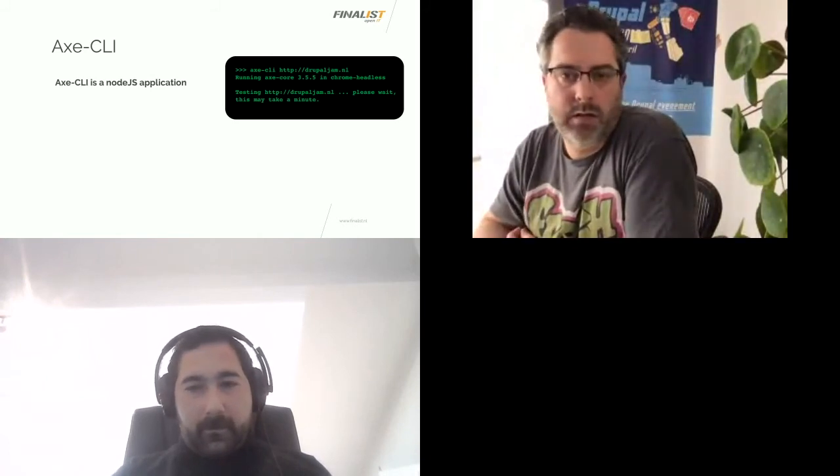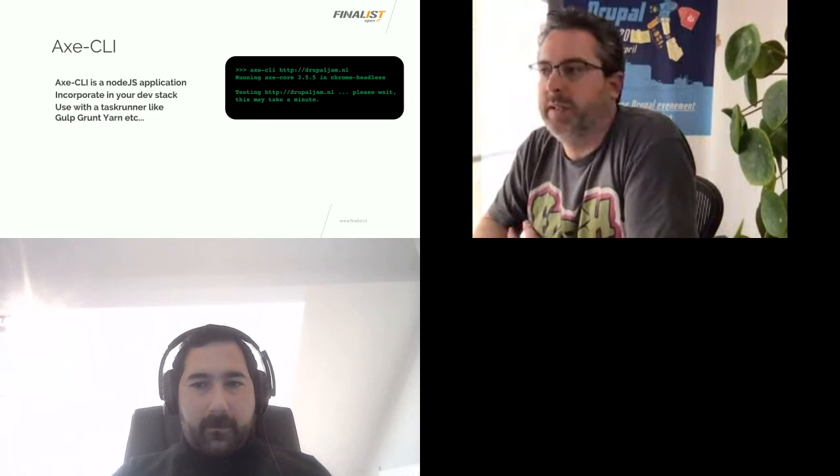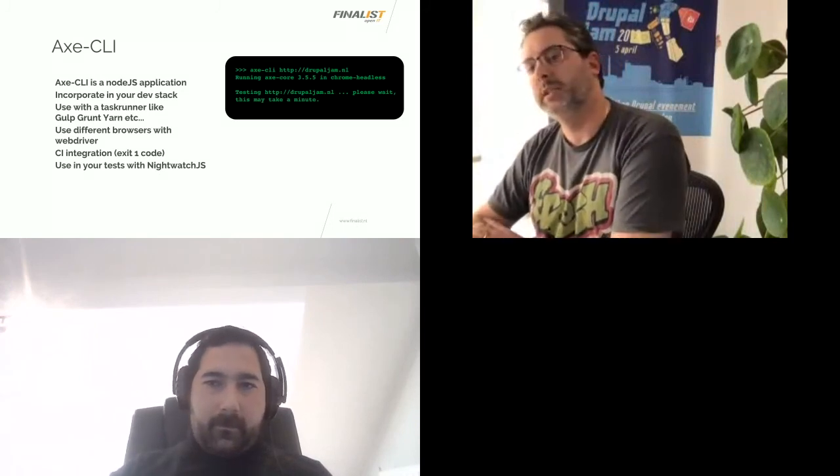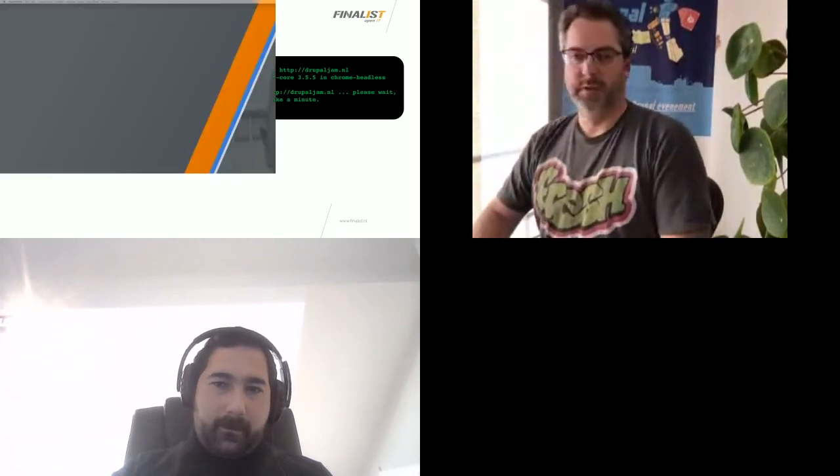Next up are tools you can use in your dev stack. We'll focus on two Node.js applications, the first of which is axe-cli, part of the axe suite from Deque. It's a Node.js app, so you can incorporate it in your dev stack — you can run a test manually, add it to your deploy hook, or use it with a task runner like Gulp, Grunt, or Yarn. By default it starts up a browser using Chrome, but you can use different browsers via WebDriver. It's also possible to use axe in your continuous integration setup by having it exit with code 1 on failure, and you can incorporate axe into your Nightwatch.js tests as well.